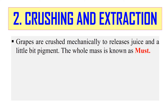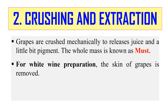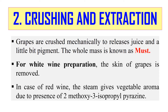The next step is crushing and extraction. The fruits are crushed and extracted mechanically, which releases the juice and sometimes pigments — this whole mass is known as must. For white wine preparation, the skin of grapes should be removed because we do not want the pigments. The harvested fruits are de-stemmed for white wine, which is not required for red wine. In red wine, the stem gives a vegetable aroma due to the presence of 2-methoxy-3-isopropyl pyrazine.